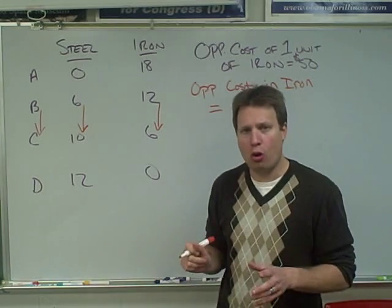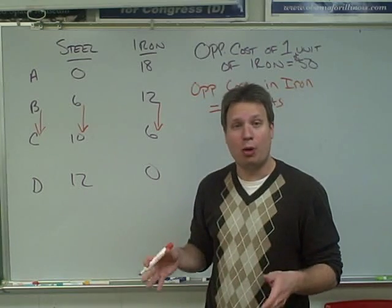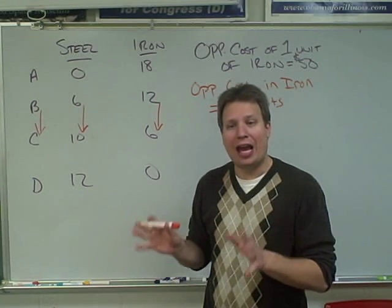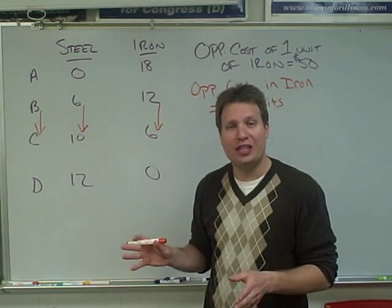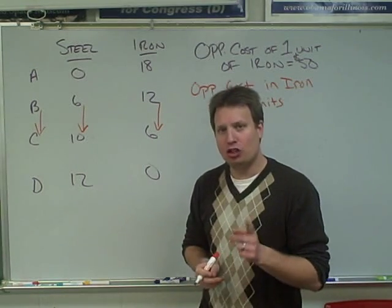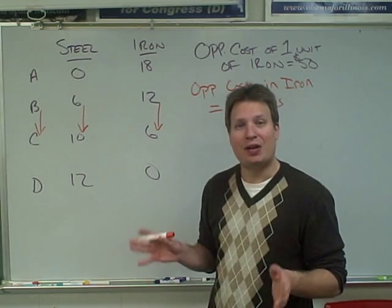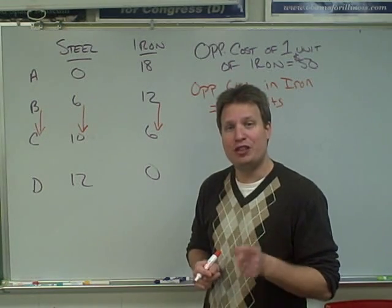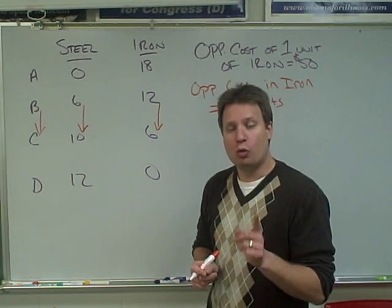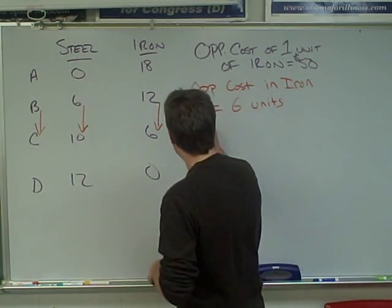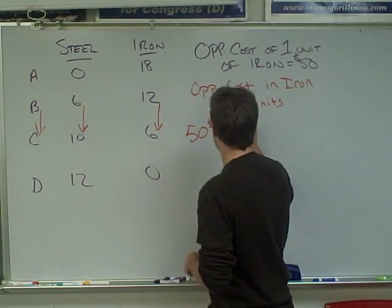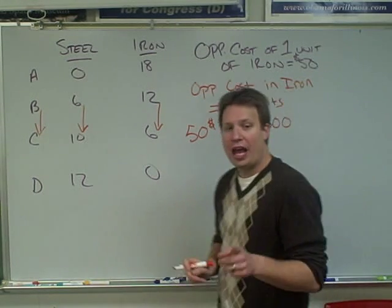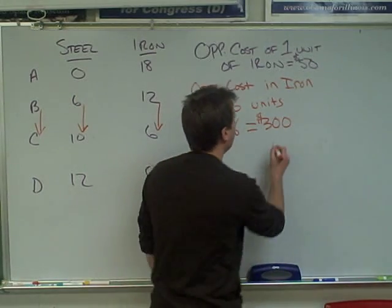The next part: suppose iron costs $50 a unit. How much are you giving up? We know that iron is $50 a unit and we are losing 6 units. So what we do is we say $50 times 6 units — these are the units that we lost — equals a total of $300. And so our opportunity cost in terms of dollars is $300.